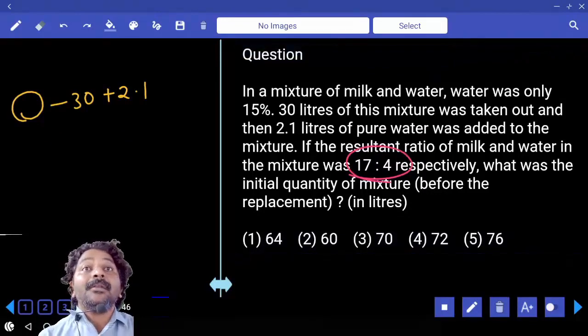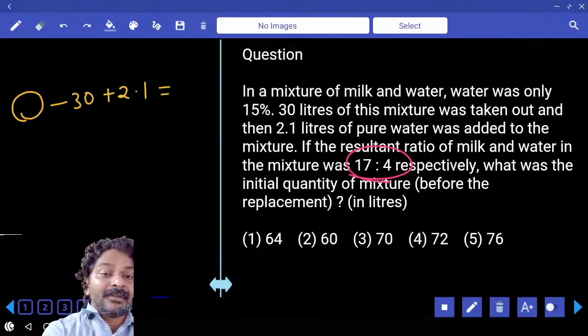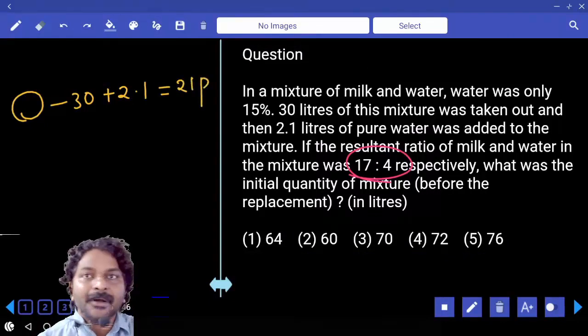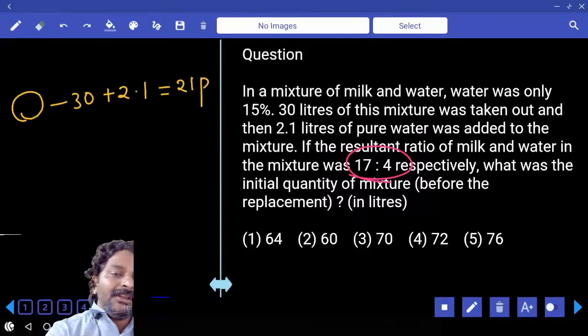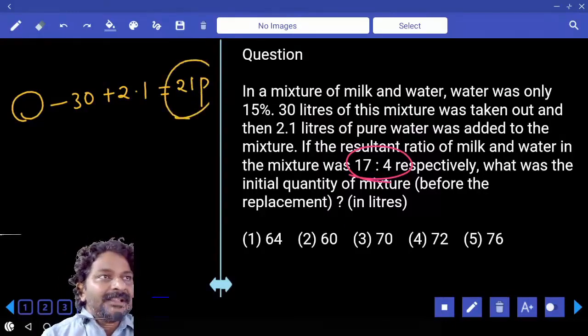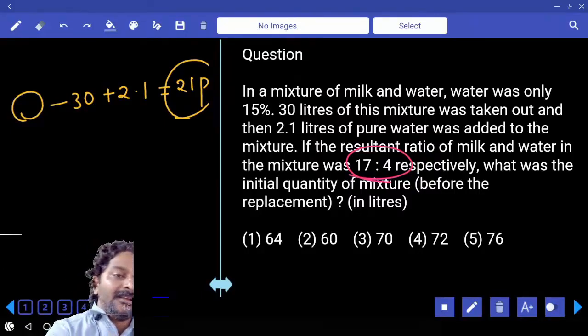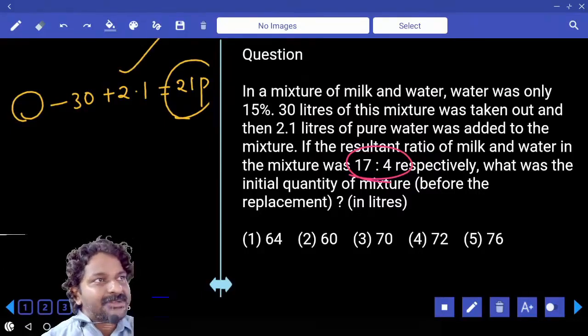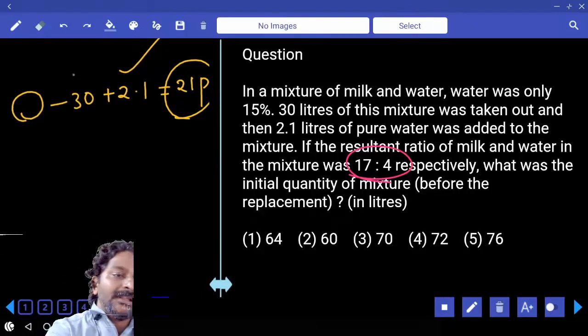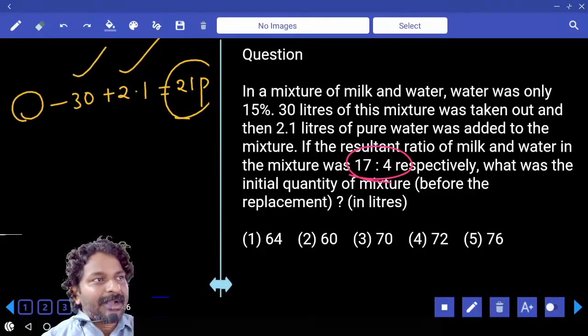Come on, 20, 21 parts, clear? Now, tell me 21, this is 3 multiple, 2.1 also 3 multiple, 30 is also 3 multiple, then your original content should be...